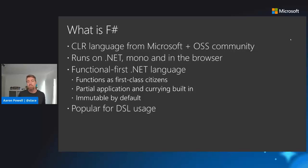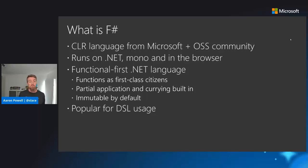Another thing that makes F# quite popular is that you can use it very much like a DSL scripting language. One popular project from the open-source community is called FAKE — an F# build automation tool, similar to what you might have from a makefile. You can use it to automate builds of .NET applications, publish to NuGet, and do any other sort of automation task in a type-safe, compilable manner using F#.